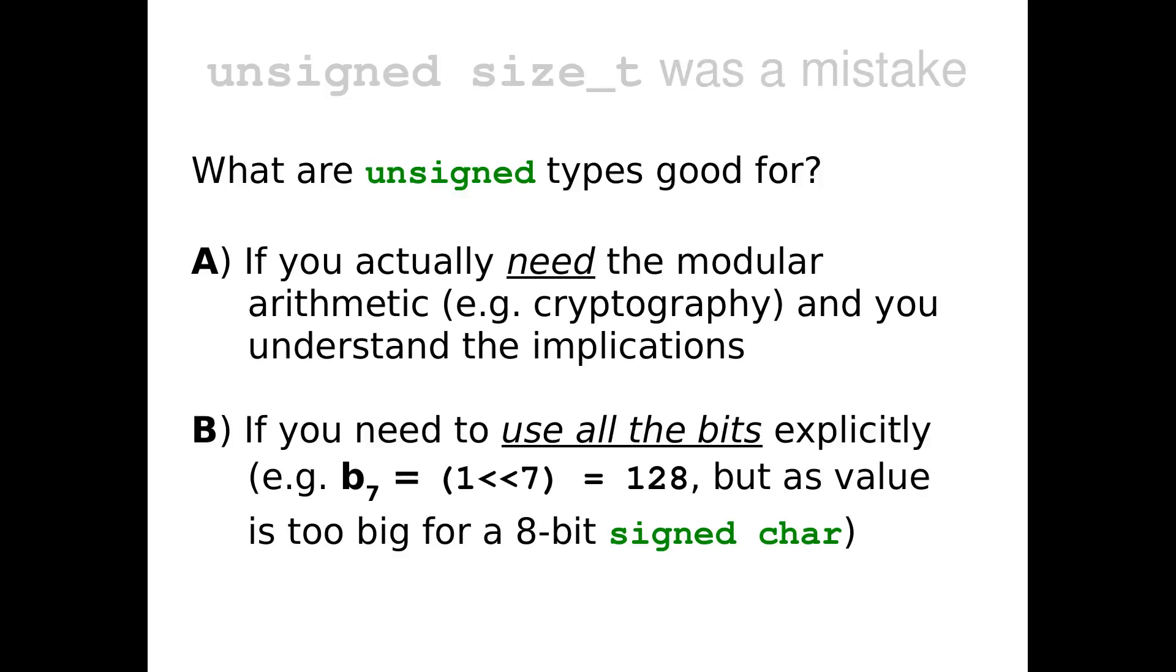But if unsigned types are not good for size, what are they good for? I think there are two use cases. The first one, if you actually need the modular arithmetic. There are a few algorithms in cryptography, for example. And there are, or in other cases, if you are using ring buffers. But you really want the index to wrap around. You really want to work with clock-like, clock-shaped numbers, with clock-like numbers. And you have to understand the implications. But that's a possible use case.